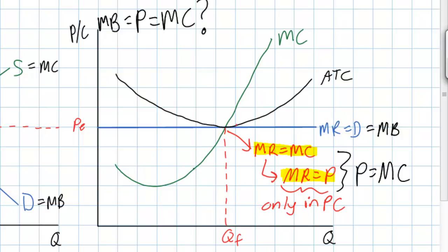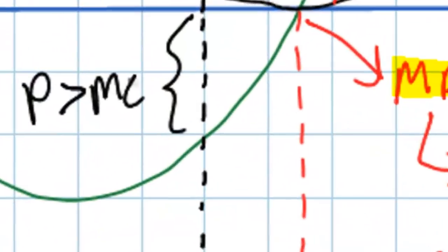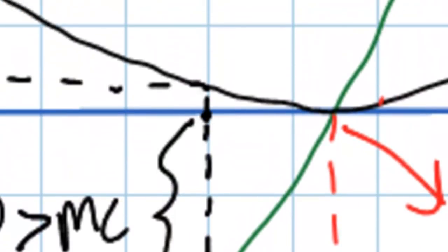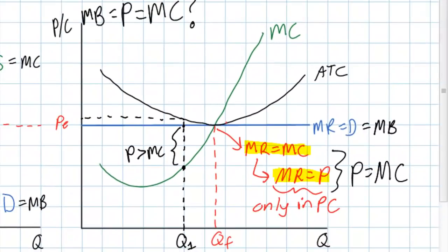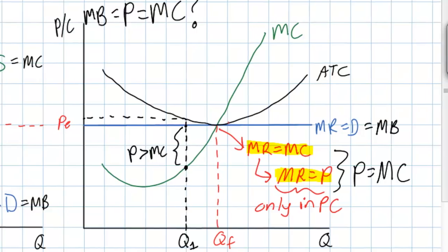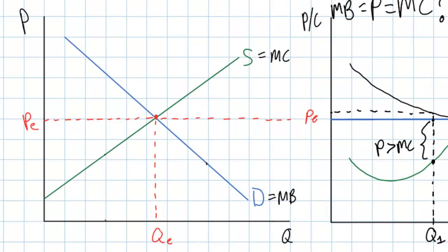What if firms were not profit maximizers? If an individual firm chose to produce at Q1 — less than its profit maximizing level — it would be earning economic losses, which is clearly not desirable. We can also see that the price is now greater than the marginal cost, which is allocatively inefficient. If a thousand identical firms were all producing at Q1 rather than their profit maximizing level, there would be an under-allocation of resources in the market — total output would be less than QE.